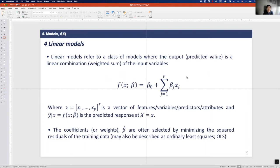This equation shows the simple linear regression model equation where x is a vector of predictors and y hat bar x is the predicted response at x. The coefficient or weight beta hats are often selected by minimizing the squared residuals of the training data. This is also described as ordinary least squares, OLS.